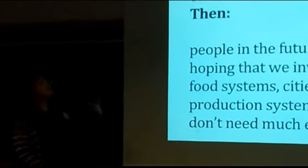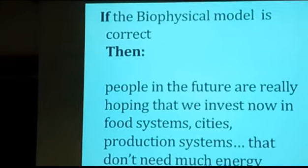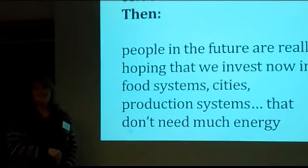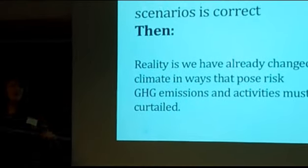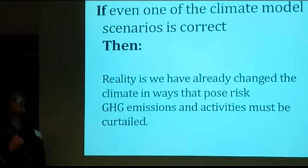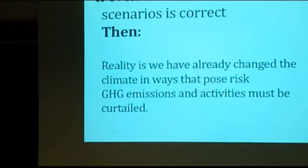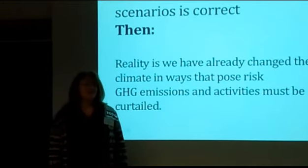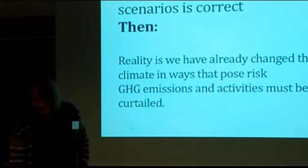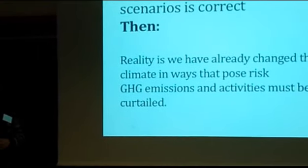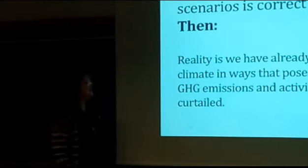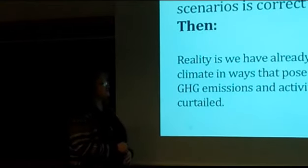If the biophysical model is correct, then people in the future are really hoping that we invest now in food systems, cities, production systems, water supply systems, and sewage systems that don't need much energy — because they won't have it. If even one of the climate model scenarios is correct — even one — then we have already changed the climate in ways that pose risk, and greenhouse gas emissions and activities must be curtailed.